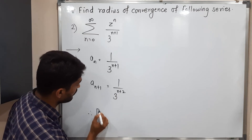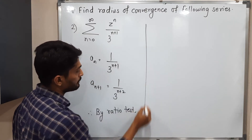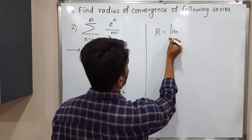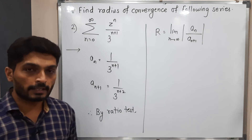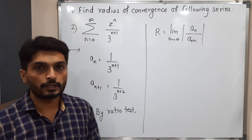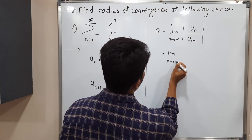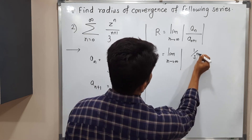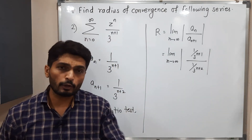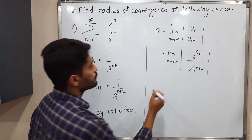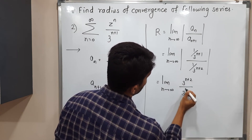By the ratio test, r is equal to the limit as n tends to infinity of the modulus of a_n upon a_{n+1}. Substituting the values: a_n is 1 upon 3 raised to n plus 1, and a_{n+1} is 1 upon 3 raised to n plus 2. Since 3 raised to n plus 2 is in the denominator of the denominator, it shifts to the numerator, giving the limit as n tends to infinity of 3 raised to n plus 2 upon 3 raised to n plus 1.